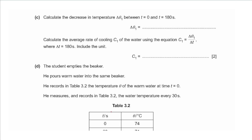Part C: calculate the decrease in temperature delta-theta-1 between time 0 and time 180. At time 0, temperature was 88°C; at time 180, it was 67°C — a difference of 21 degrees Celsius. Calculate the average rate of cooling C1 = delta-theta-1 / delta-t = 21 / 180, giving approximately 0.12 degrees Celsius per second.